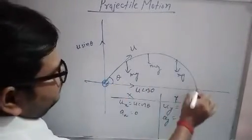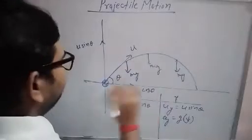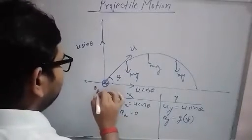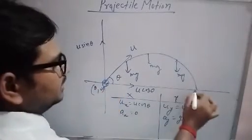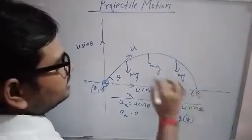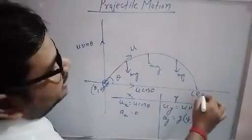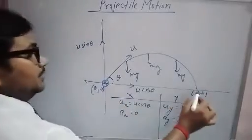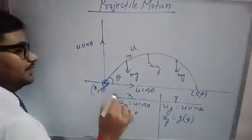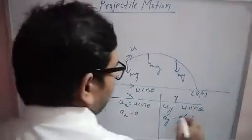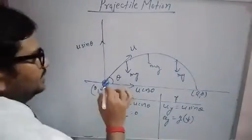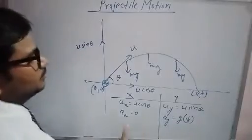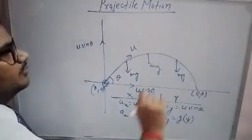In the total time of flight, the y-coordinate is 0. At the starting point, both x and y coordinates are 0. At the landing point, the x-coordinate is the range and the y-coordinate is also 0. So if you solve the equation for the y-axis, you use the condition that displacement along the y-axis is 0 at the time of flight.